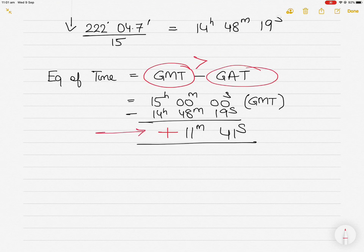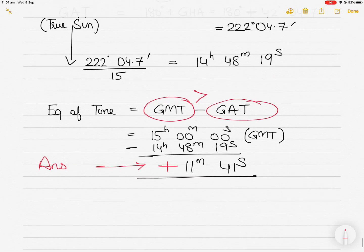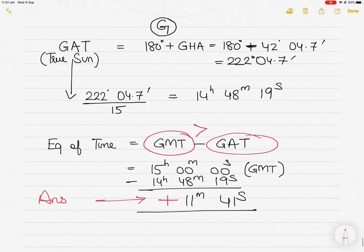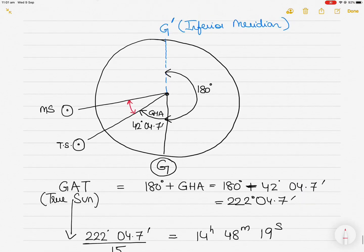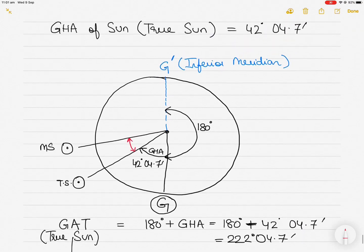So the answer is: Equation of Time = 11 minutes 41 seconds, positive. As I mentioned in my previous video, the equation of time normally does not exceed 16 minutes 22 seconds, so this value makes sense. That is pretty much the solution.